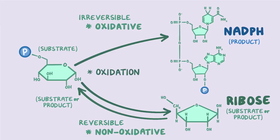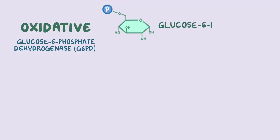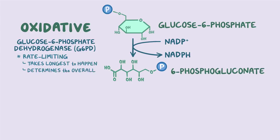Oxidation of a molecule means that a molecule donates or loses its electrons, in the form of hydrogens, to another molecule. To launch the oxidative phase, an enzyme called glucose-6-phosphate dehydrogenase, or G6PD, snatches a hydrogen from glucose-6-phosphate and offers it to NADP+, making 6-phosphogluconate and NADPH in the process. This is the rate-limiting step of the pentose phosphate pathway — the step that takes the longest to happen, and therefore determines the overall rate of the pathway.